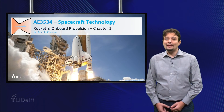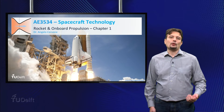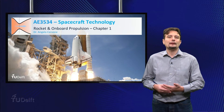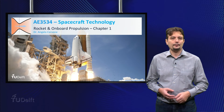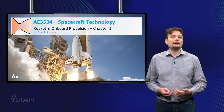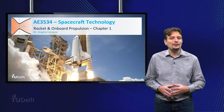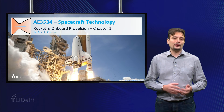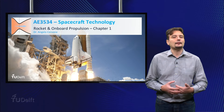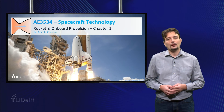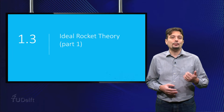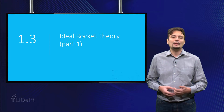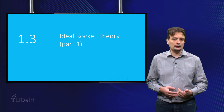Welcome back! In any engineering design problem, it is extremely useful to derive a simplified model that describes the physics of the system. Such simplified models are a great support to the preliminary design phase, and help to understand how the different design parameters influence the system performance. The same applies to space propulsion, for which the most commonly used simplified model is known as ideal rocket theory.